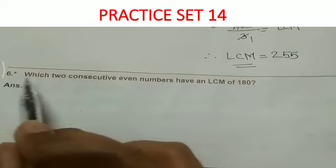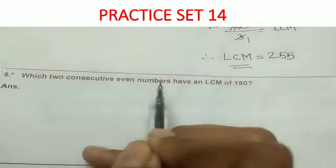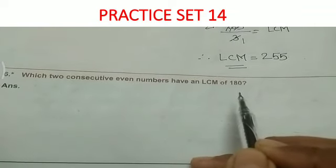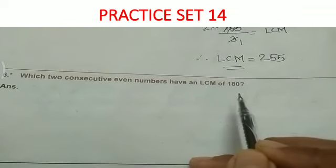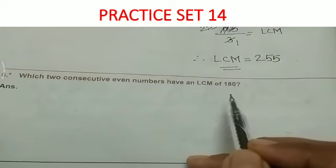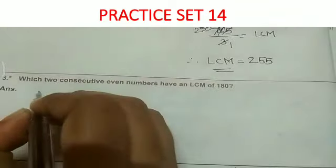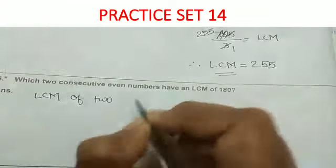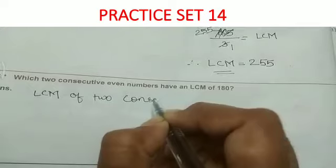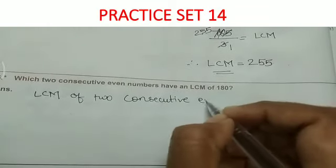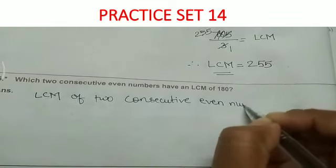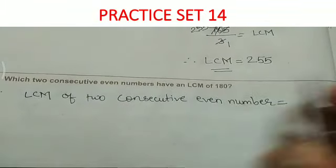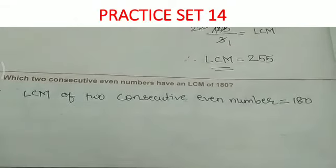Now question number 6: which two consecutive even numbers have an LCM of 180? We have to find out which two numbers have an LCM of 180. The LCM of 2 consecutive even numbers is given as 180.